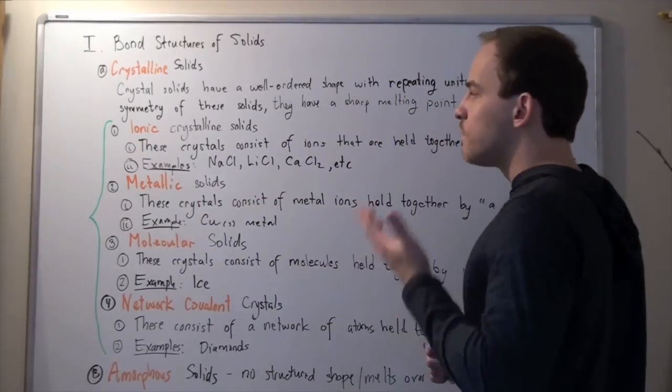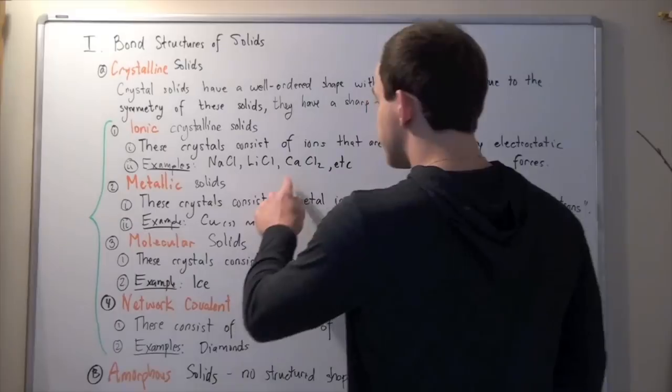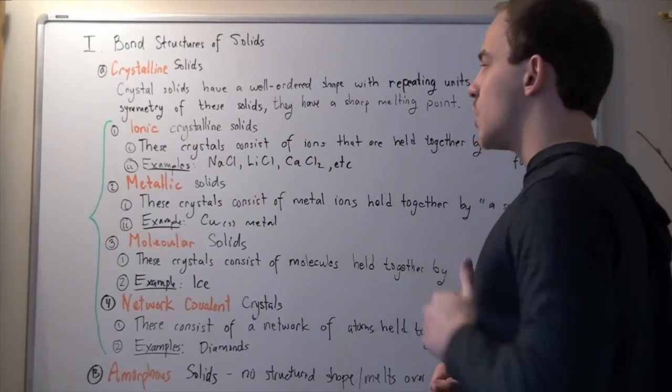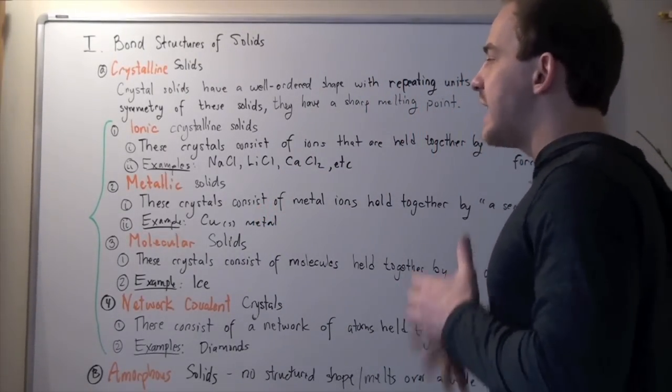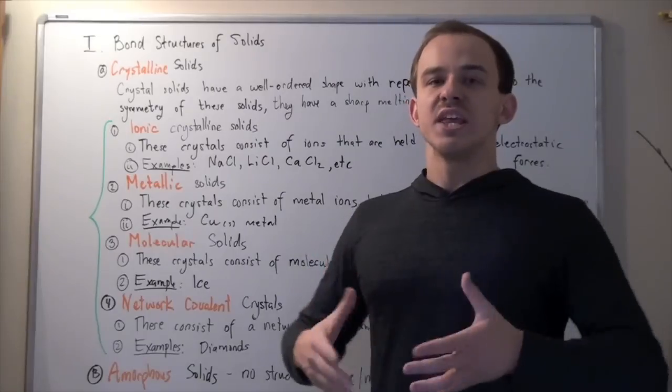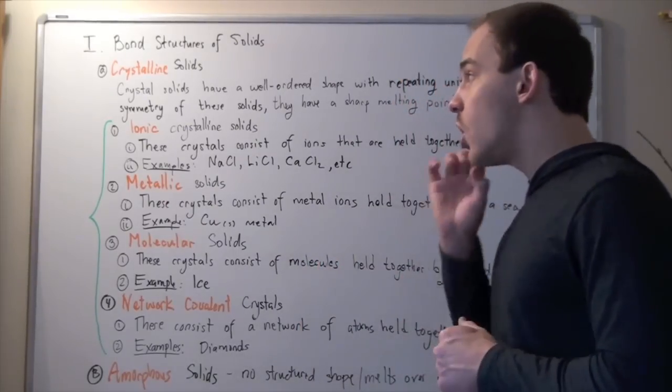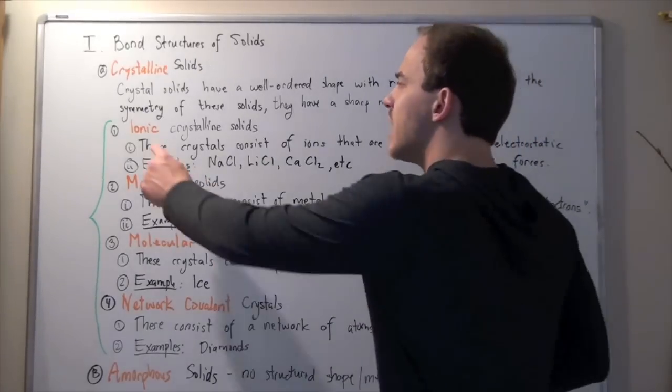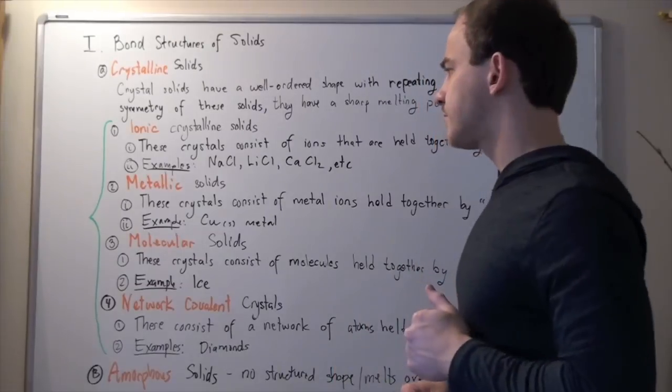Lithium chloride is also an ionic crystal. Calcium chloride, or calcium dichloride, is also an ionic crystal. Basically, whenever an alkali metal or an alkaline earth metal reacts with a halogen, they will always produce ionic crystals.